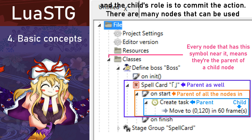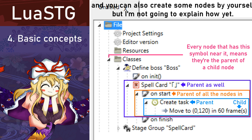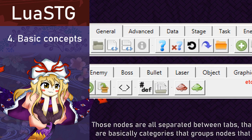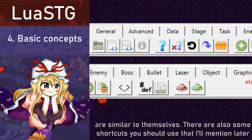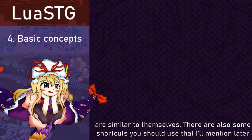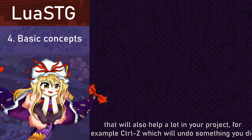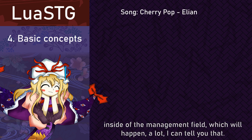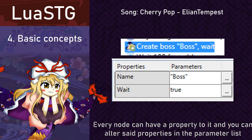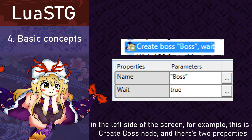There are many nodes that can be used, and you can also create some nodes by yourself, but I'm not gonna explain how yet. Those nodes are all separated between tabs and categories that group similar nodes. There are also some shortcuts you should use that I'll mention later, which can help a lot in your project. For example, Ctrl-Z, which will undo something that you did inside the Imaginament field — which will happen a lot, I can tell you that. Every node can have a property to it, and you can also set properties in the parameter list on the left side of the screen.